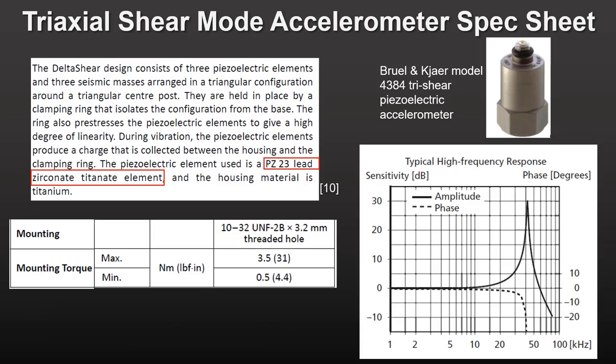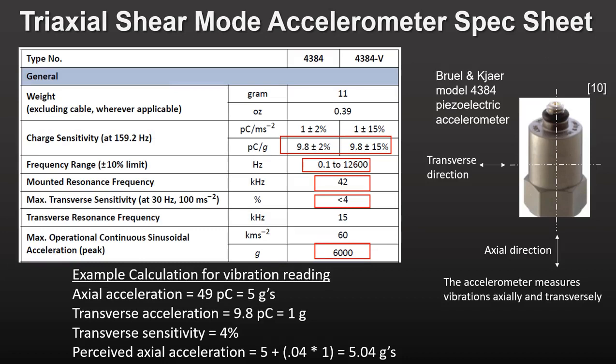Looking at a commercial tri-axial shear mode accelerometer: the three ceramic elements are held in place by a clamping ring that isolates them from the effects of base strain. The transfer function is flat until 12.6 kHz, as the sensor has a resonance frequency at 42 kHz. Piezoelectric accelerometers generally have wider frequency response than capacitive or piezo-resistive ones. Both the maximum and minimum mounting torques are specified — too little torque and you won't transmit the vibrations of the structure to the accelerometer; too much torque and you will preload the ceramic elements and produce false readings.